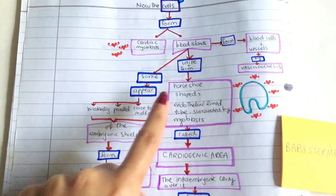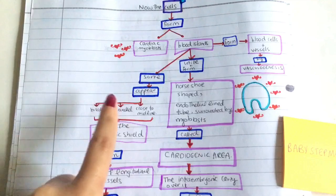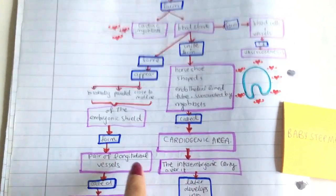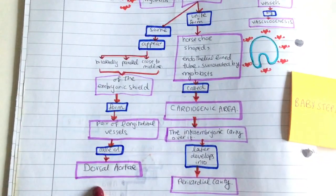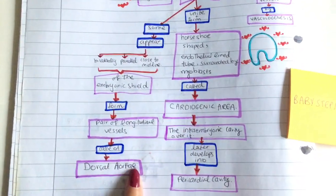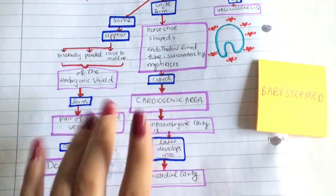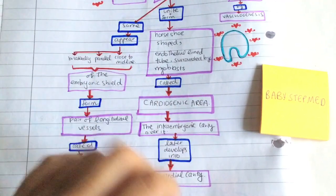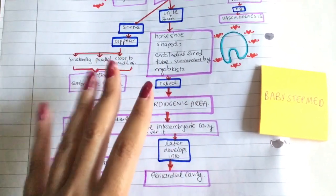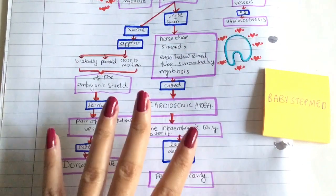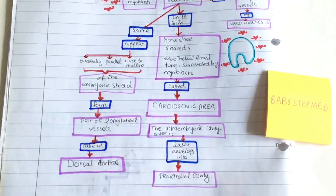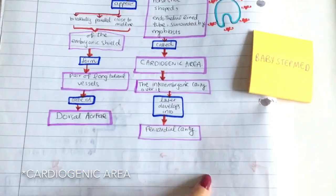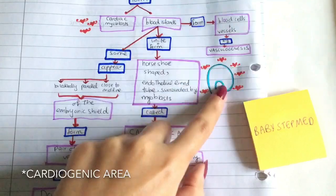Some of the blood islands appear bilaterally, parallel or close to the midline of the embryonic shield, and they form a pair of longitudinal vessels called the dorsal aorta. The cardiogenic area has the intraembryonic cavity over it, which forms the pericardial cavity. That is what the primary heart field is.